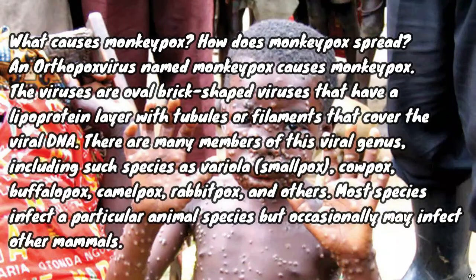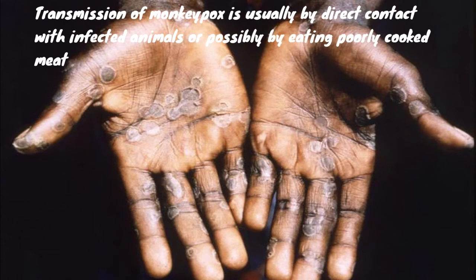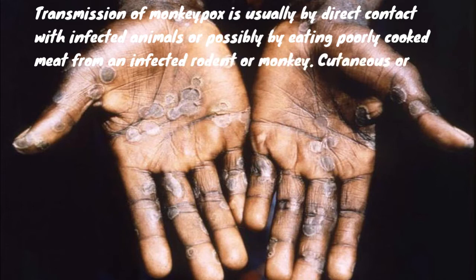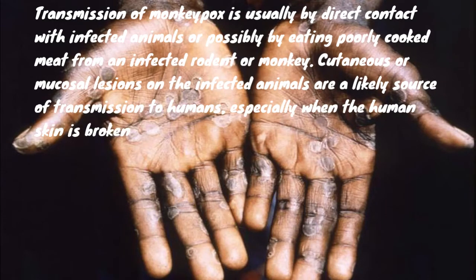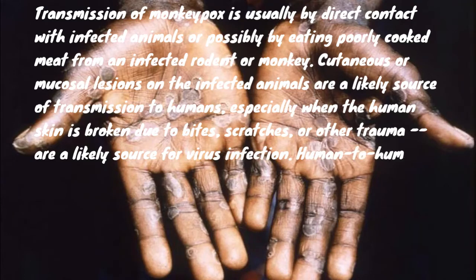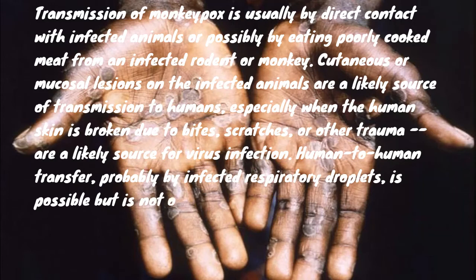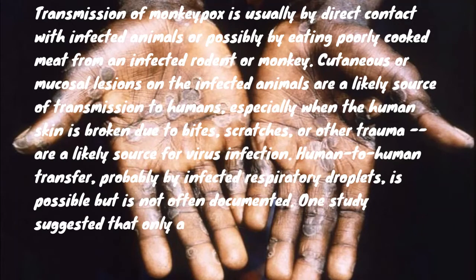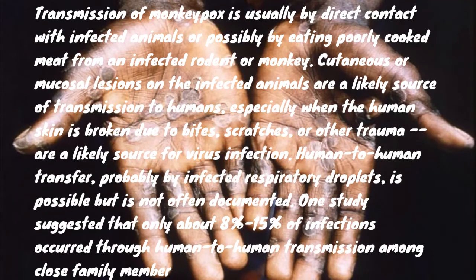Transmission of monkeypox is usually by direct contact with infected animals, or possibly by eating poorly cooked meat from an infected rodent or monkey. Cutaneous or mucosal lesions on infected animals are a likely source of transmission to humans, especially when human skin is broken due to bites, scratches, or other trauma. Human-to-human transfer, probably by infected respiratory droplets, is possible but not often documented. One study suggested that only about 8–15% of infections occurred through human-to-human transmission among close family members.